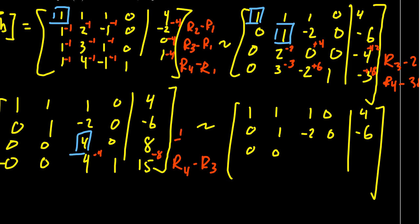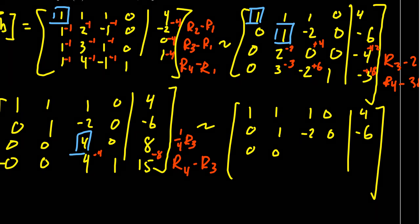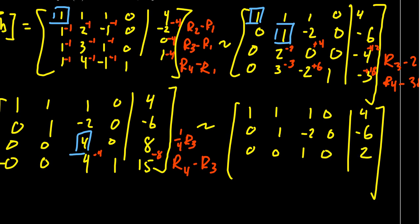So I'm actually going to divide row 3 by 4 as well, just to help me out here. 1, 0, 2. And then we're going to get 0, 0, 0, 1. And then 15 take away 8 is going to be 7.